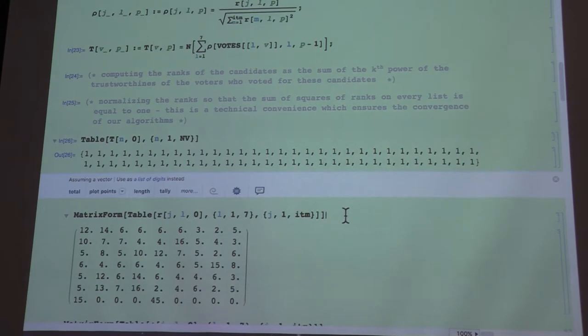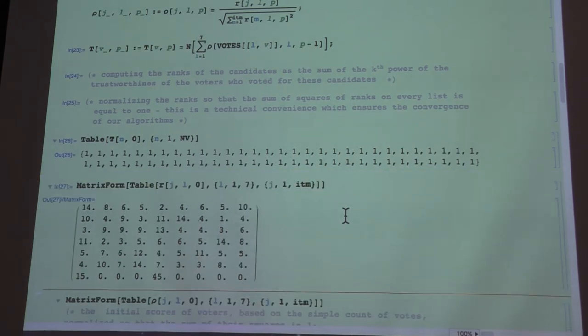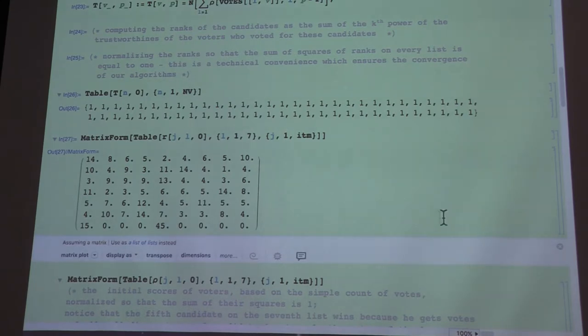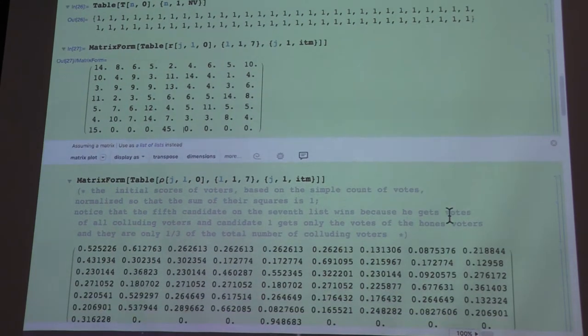So the first round of r will just give you the number of votes. And you can see here, because there are only 15 honest voters, candidate number 1 on the last 7th list got 15 votes. And the candidate that is being promoted by the polluting voters got 45 votes.